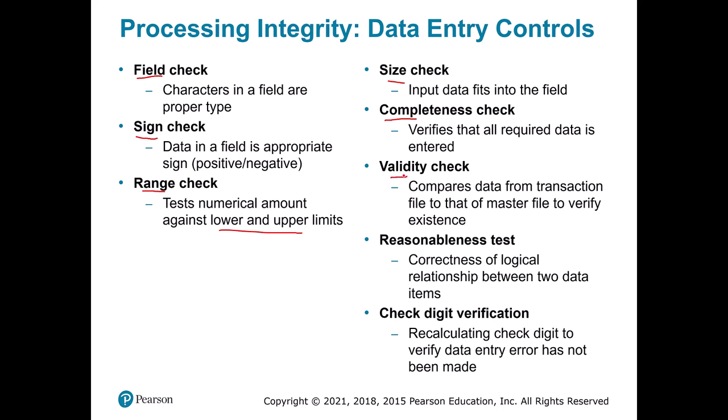A validity check verifies a record against a master file — for example, if you send a payment to AT&T, they verify you are a customer before applying it. A reasonableness check might verify that if you live in West Virginia, you should have a city that is also in West Virginia. Then there's a check digit, which can be as simple as adding all the numbers together to see if the result is even or odd, or more advanced like with Visa card numbers.